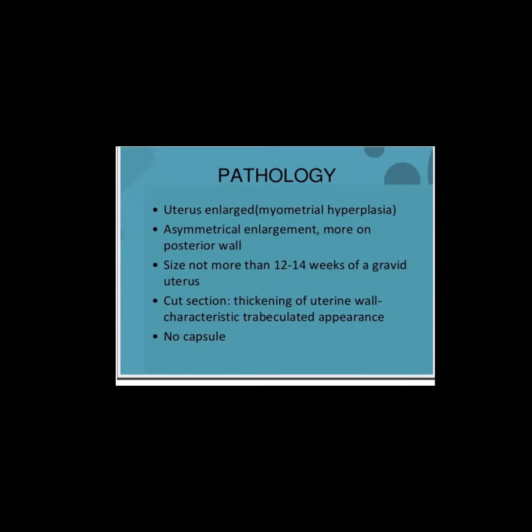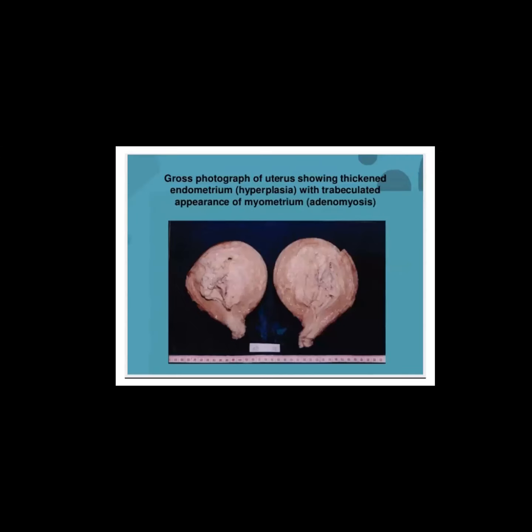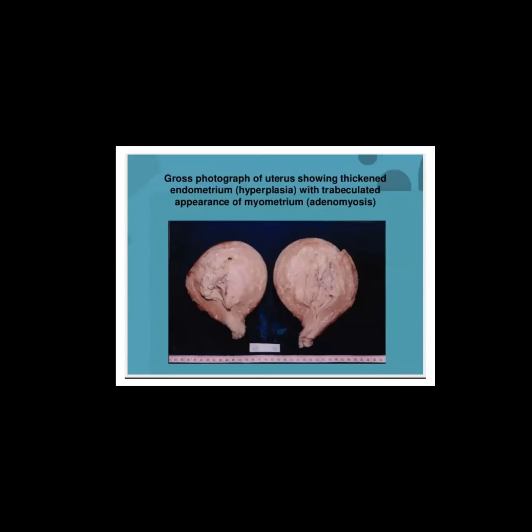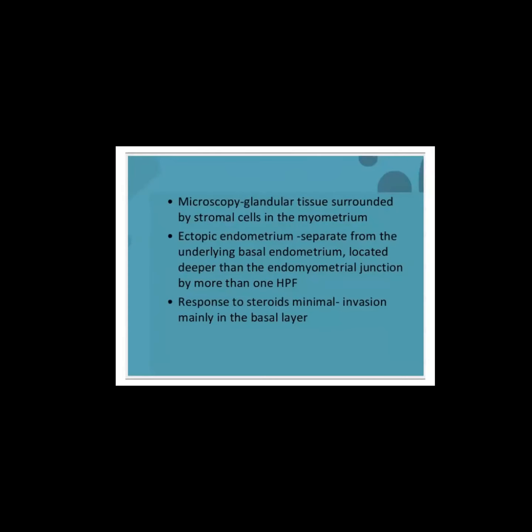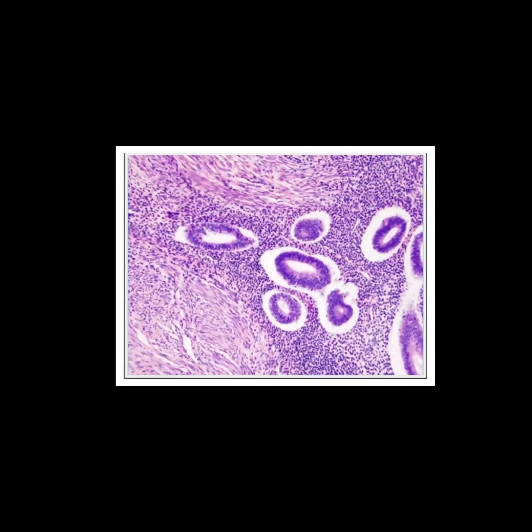In pathology, the cut section shows visible blood spots and a trabeculated appearance. There is no capsule. Under the microscope, glandular tissue is surrounded by stromal cells.